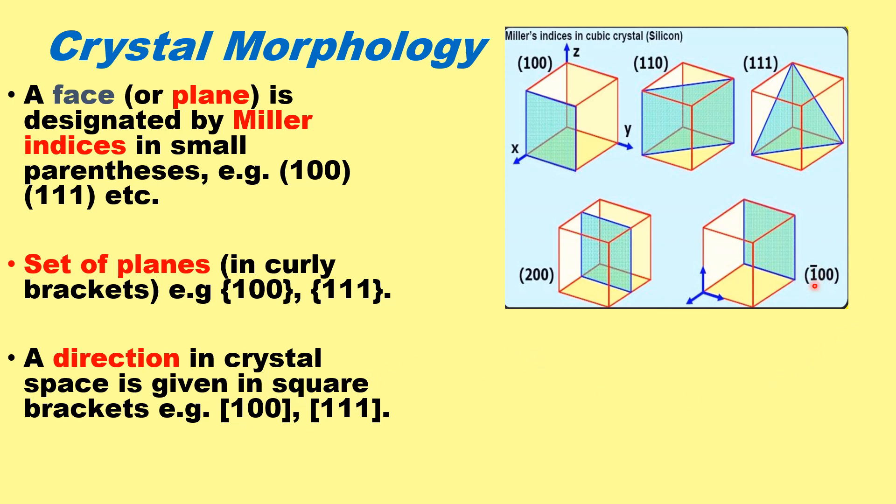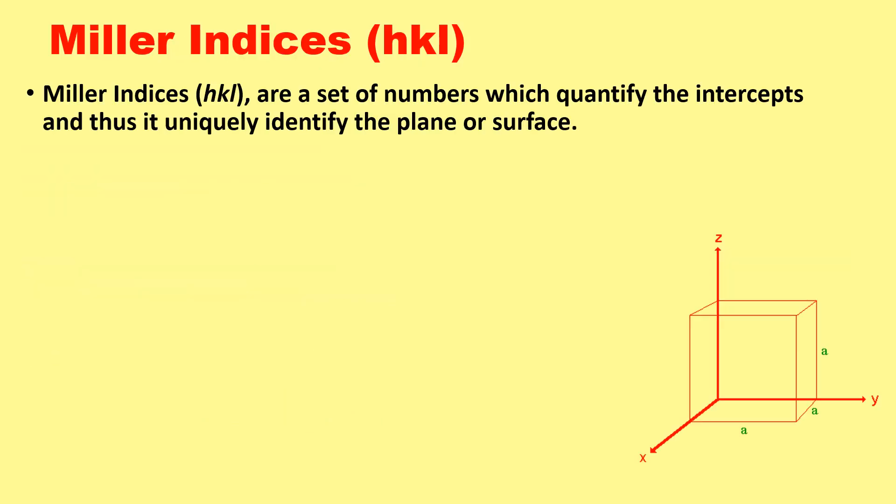Sometimes the negative direction is shown by a bar on the indices. How to find out the Miller indices? Miller indices are the set of numbers which quantify the intercepts on different axes.